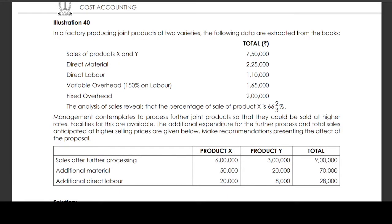In a factory producing joint products of two varieties, the following data are extracted from the books: sales of product X and Y — 7,50,000; direct material — 2,25,000; direct labour — 1,10,000; variable overhead at 150% on labour — 1,65,000; fixed overhead — 2,00,000. The analysis of sales reveals that the percentage of sale of product X is 66 and 2/3 percent.